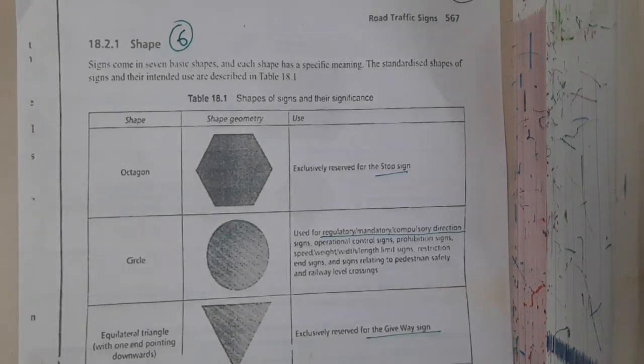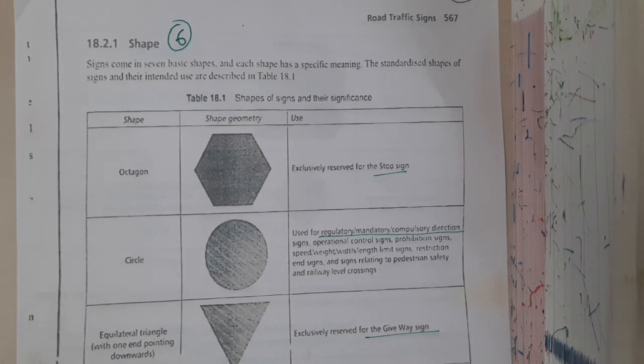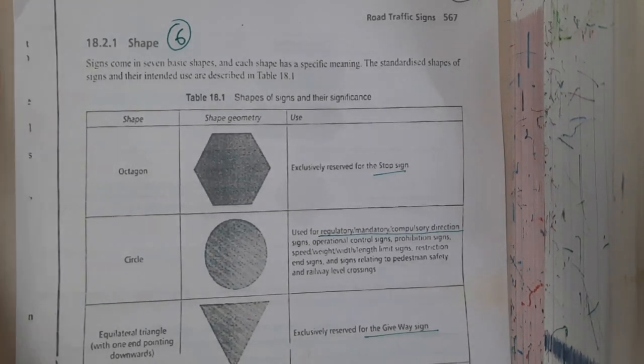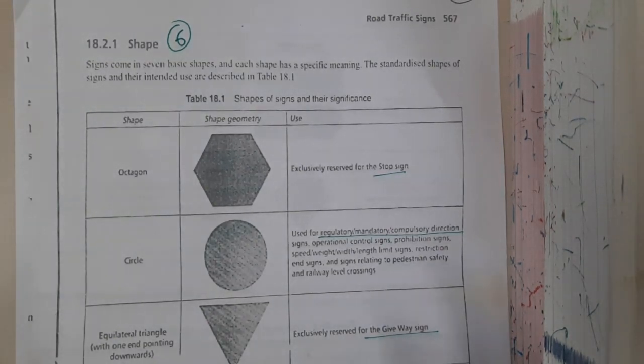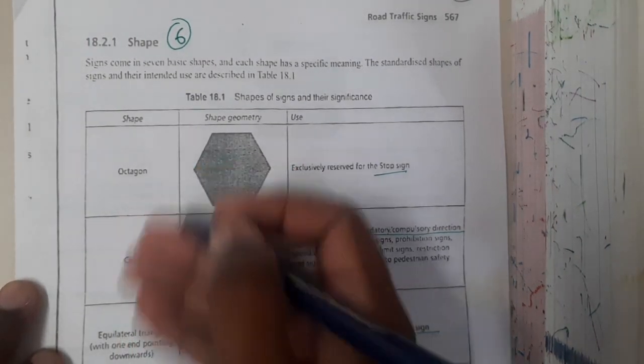Hello guys, we are back with the next lecture. In this lecture, let us go through different shapes and colors. Basically, whatever signs we are seeing on the roads, there is a huge meaning for each and every sign, its shape, and its color. So first, let us go through the shapes, then we will be moving on to the colors.